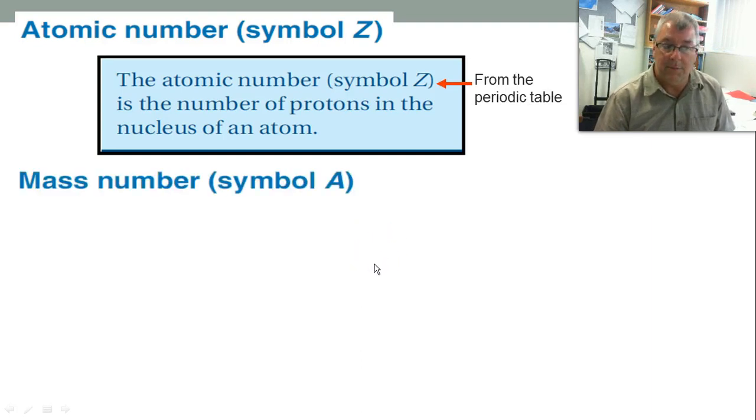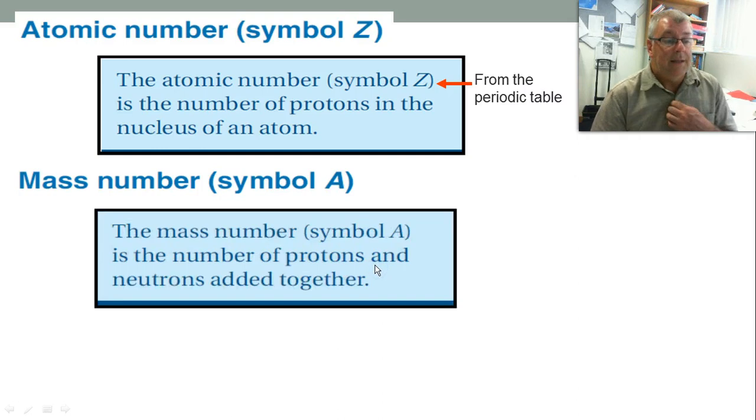The next thing is the mass number, sometimes given the symbol A. The mass number is, remember that we said most of the mass is in the nucleus of an atom. Therefore, the mass number is the number of protons and neutrons added together. That gives us the mass number.